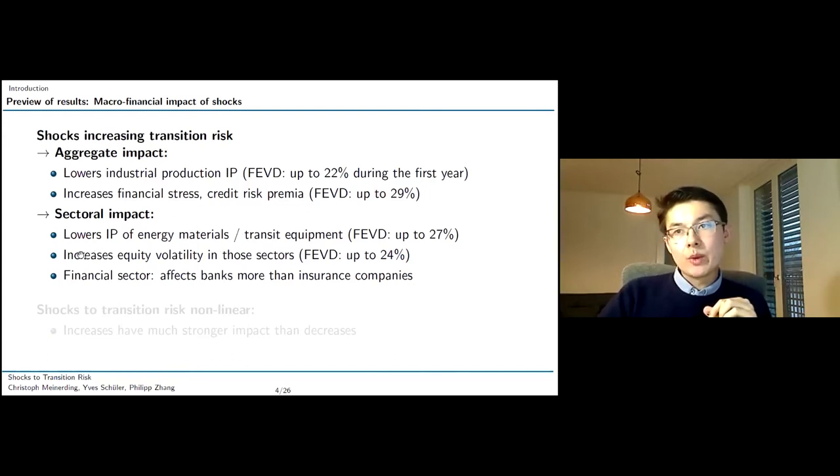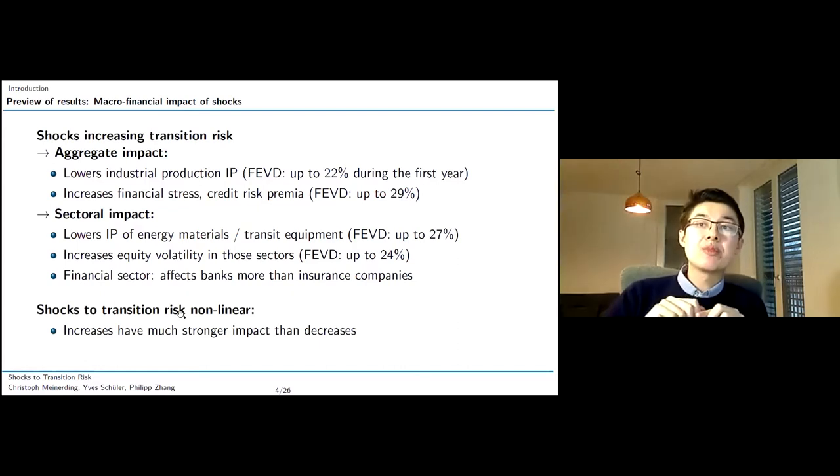This convinces us even more that what we are measuring goes in the right direction. We see up to 27% of the variance explained by our shocks. In a separate model, we look at equity volatility of sectors of the U.S. economy. Here again, we see up to 24% of variation in the equity volatility of these sectors explained by our shocks. What we also find is within the financial sector, insurance companies are less affected than banks. Finally, we also observe a pronounced non-linearity for our shocks, meaning that increases in transition risk have a far stronger, more significant impact on industry production and other macroeconomic variables than decreases.